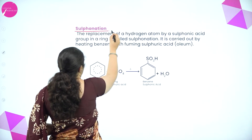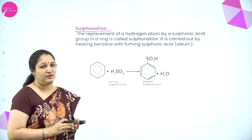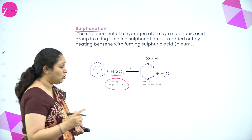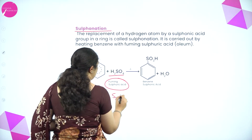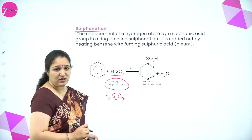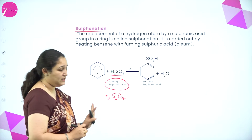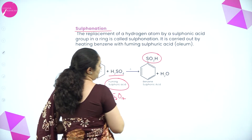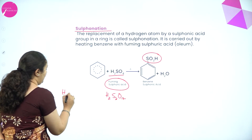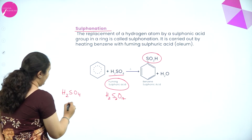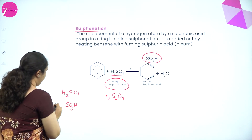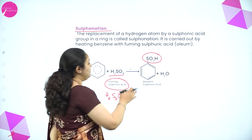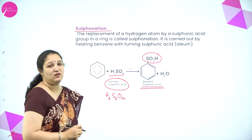Next is the sulfonation reaction. You can treat benzene with concentrated sulfuric acid or fuming sulfuric acid — oleum, that is H2S2O7. When benzene is heated with sulfuric acid, you get SO3H attached to the ring. You can think of it as H2SO4 where SO3 and one H and one OH are split off. The SO3H group is the electrophile which gets substituted, and the product is called benzene sulfonic acid.